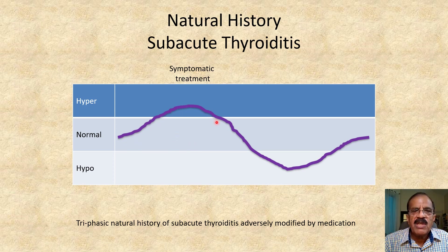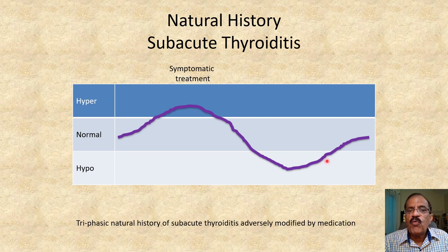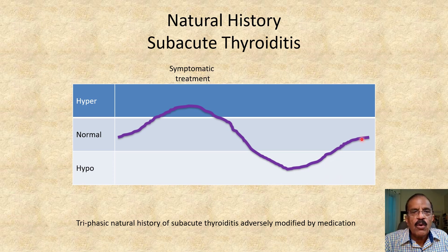This is a temporary state; then gradually it comes back to normal, and the third phase is hypothyroidism — again temporary. There is a triphasic natural history of subacute thyroiditis, and ultimately it comes back to normal, so just leave the patient alone.